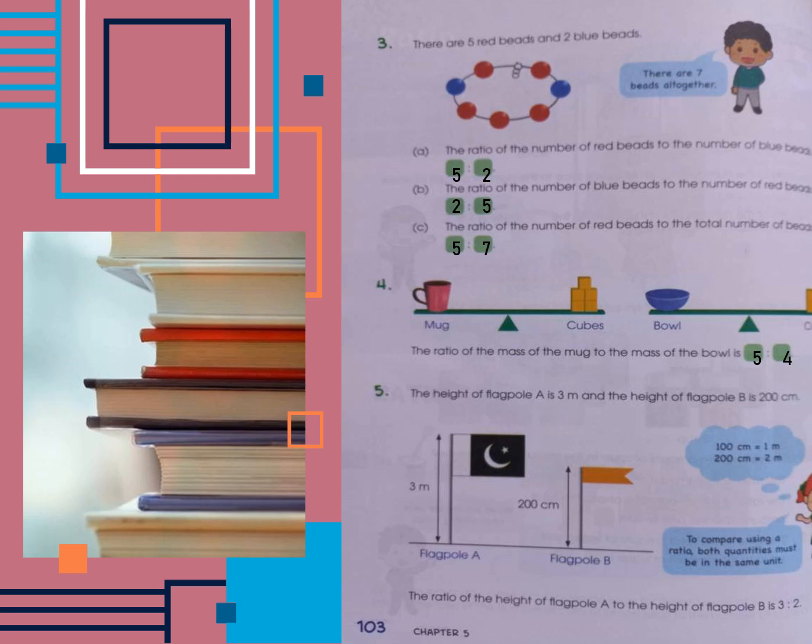In question four, we have to find the ratio of the mass of the mug to the mass of the bowl. The mass of the mug is represented by five cubes and the mass of the bowl is represented by four cubes. So the ratio of the mass of the mug to the mass of the bowl is five to four.